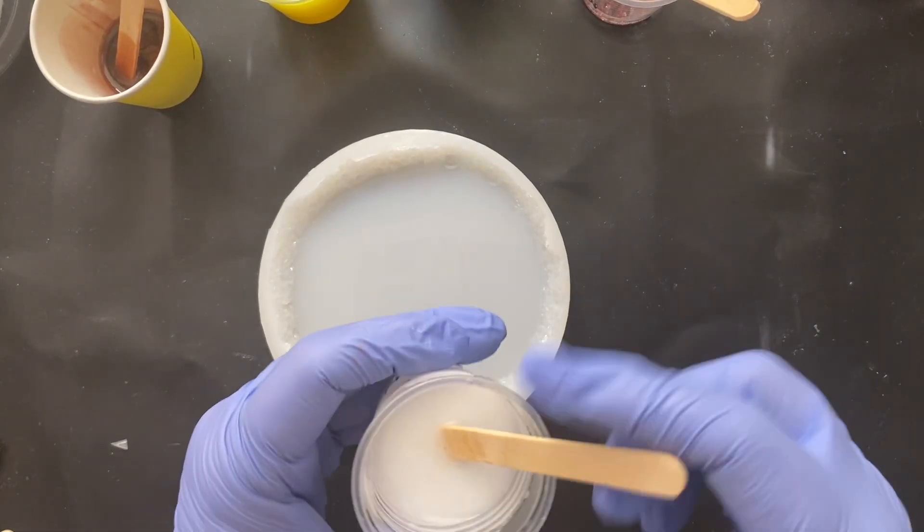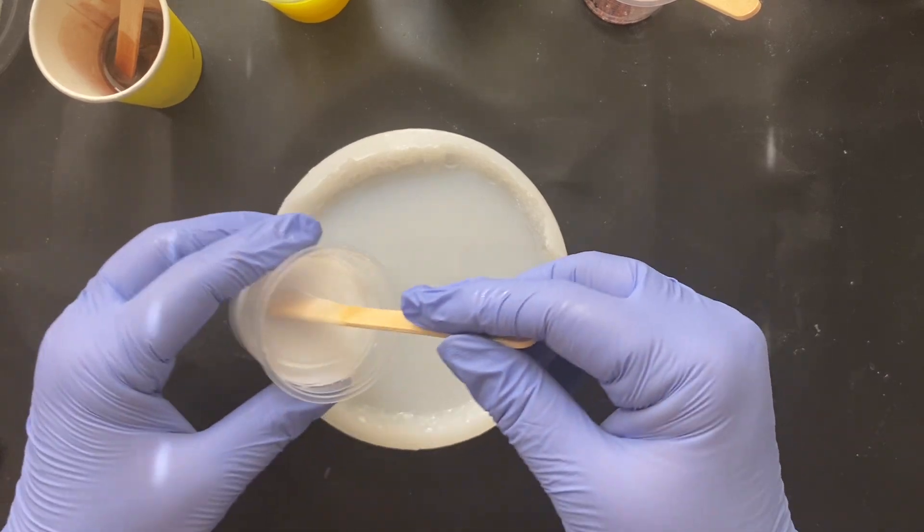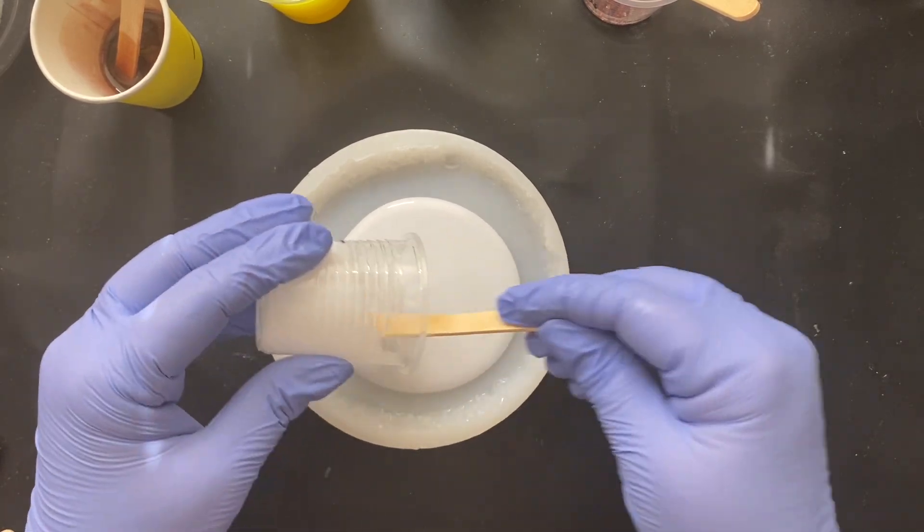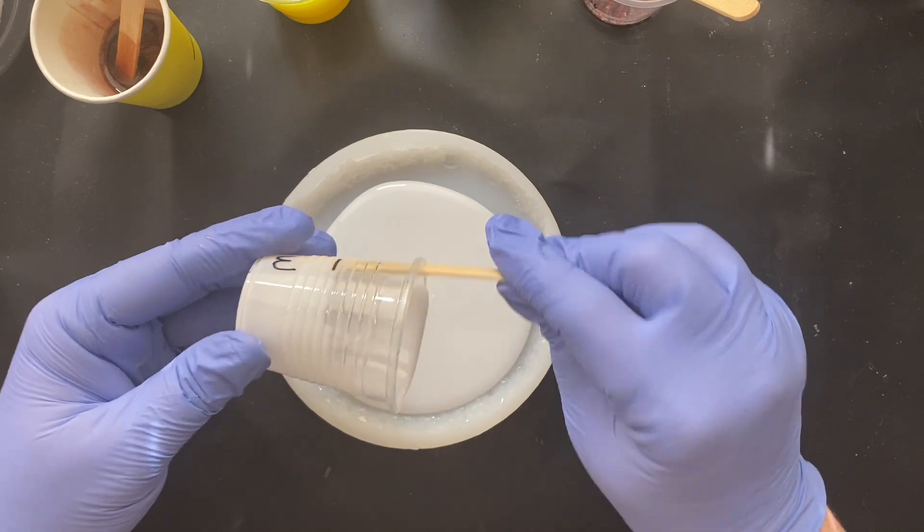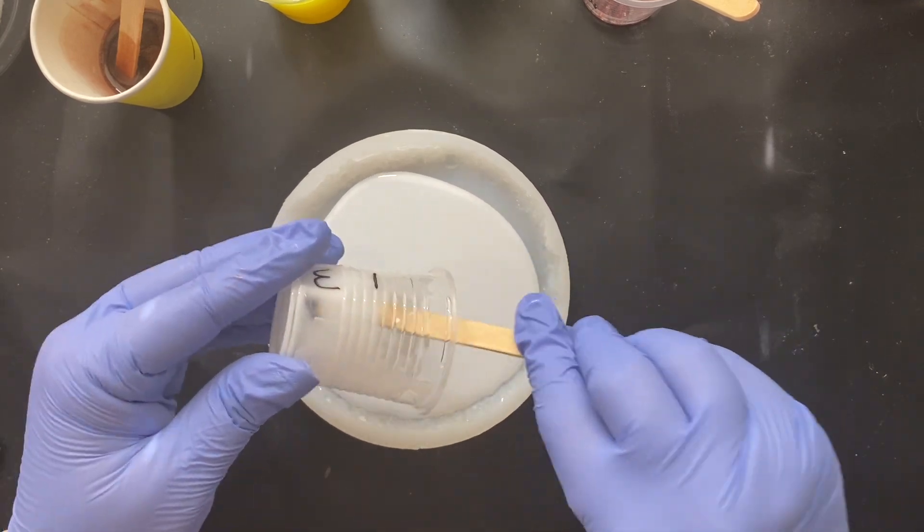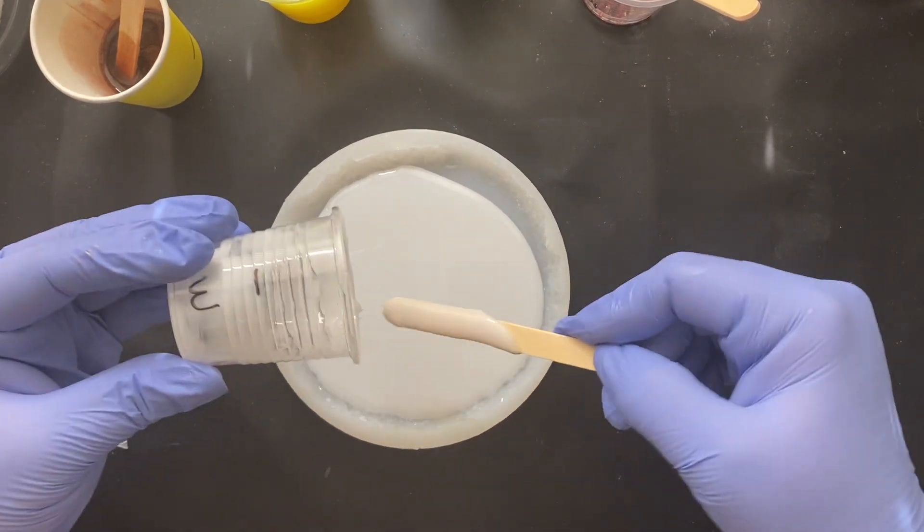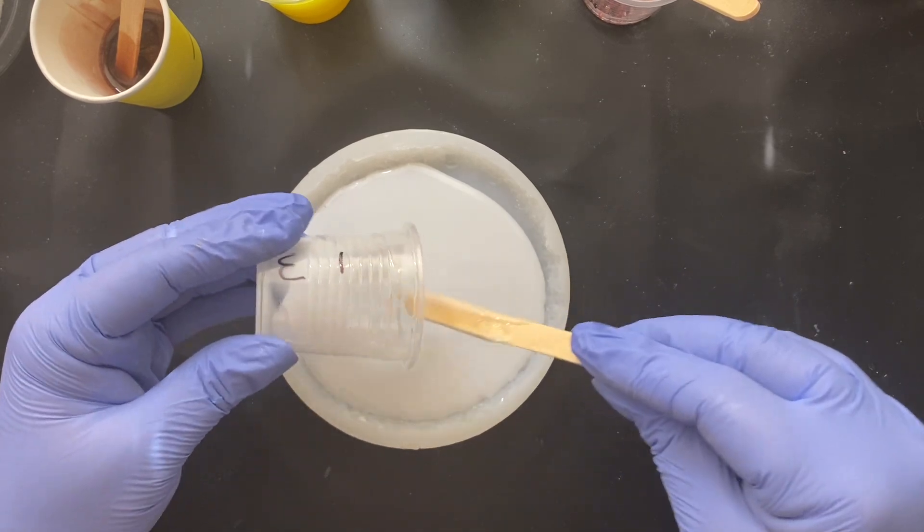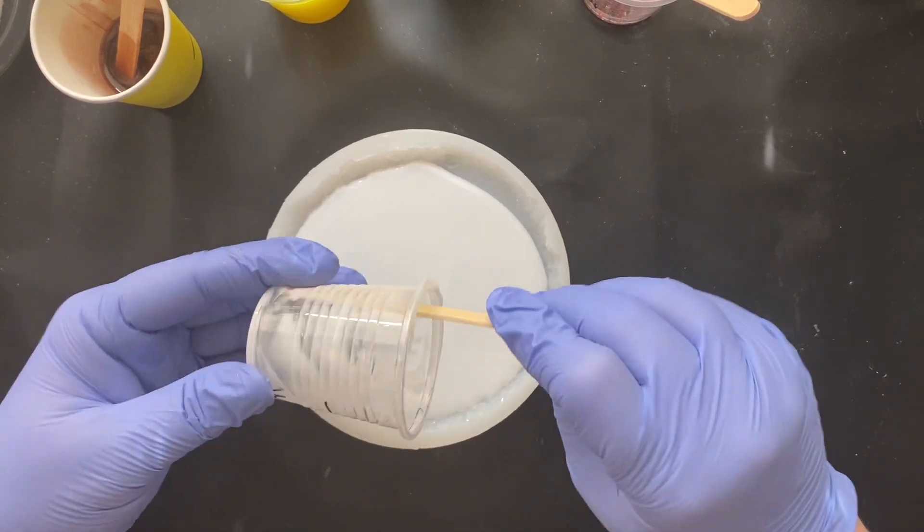All right. So without further ado, I'm going to go ahead and start pouring. First thing I'm going to do is pour my white into the bottom. Now the basis of this recipe is from resincourses.com. I'm sorry. I keep forgetting to mention that I have long COVID.